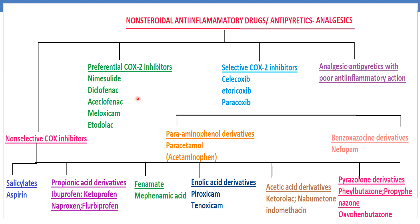The selective COX-2 inhibitors are celecoxib, etoricoxib, and parecoxib. Finally, analgesic and antipyretics with poor anti-inflammatory action include paracetamol, which is also called acetaminophen and belongs to the para-aminophenol derivative group, and nefopam, which belongs to the benzoxazine derivatives.